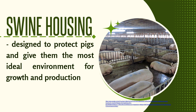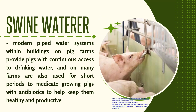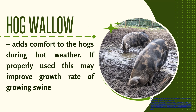Next, the materials and equipment for hog or swine rearing. Swine housing is designed to protect pigs and give them the most ideal environment for growth and production. The pig feeding trough can be positioned in the center of the pig barns so that pigs can take feed from all directions. The swine waterer — a modern pipe water system in pig farm buildings — provides pigs with continuous access to drinking water, and on many farms is also used to medicate growing pigs with antibiotics to help keep them healthy and productive. The hog wallow adds comfort to the hogs during hot weather, and a properly used wallow may improve the growth rate of growing swine.